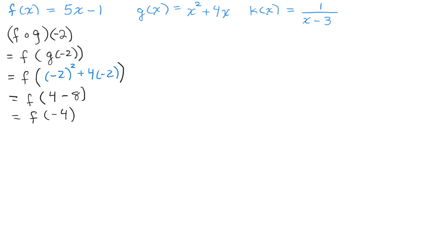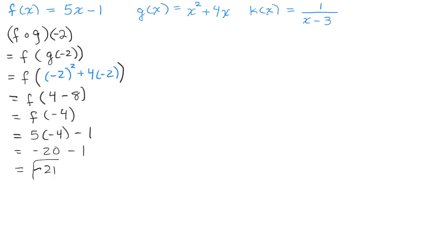Now I plug negative 4 into the f function, replacing x in 5x minus 1 with negative 4. That gives me 5 times negative 4 minus 1, which is negative 20 minus 1, the same as negative 20 plus negative 1. The answer is negative 21.